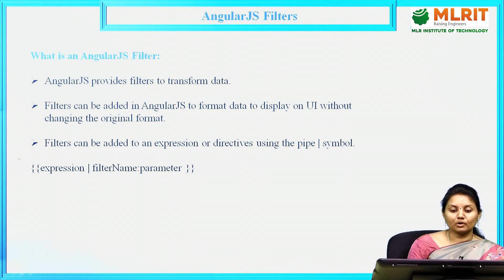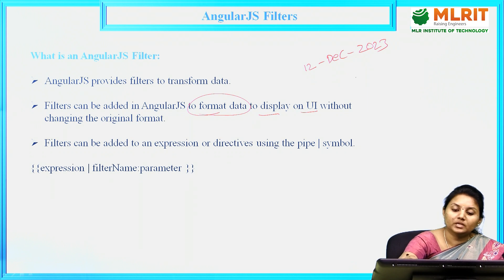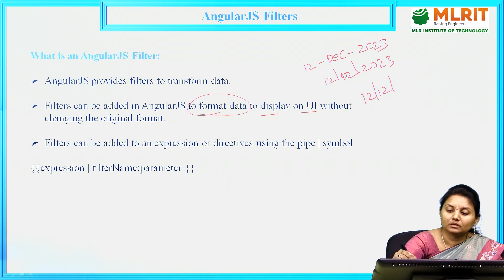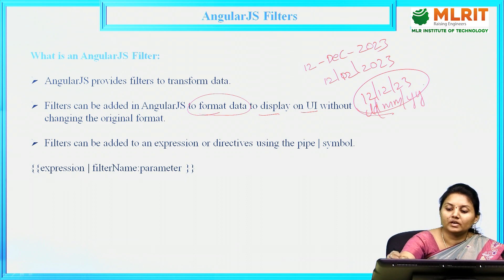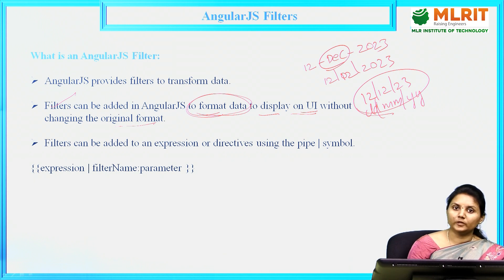Filters can be added in AngularJS to format the data to display on the UI. A particular format should be given. Suppose if I just wanted to print 12th December 2023 in a specific way — like DD/MM/YYYY format — these filters are used to format the data and display on UI without changing the original format. The original format remains as is, but you can display it in the format you require using these filters.